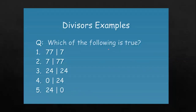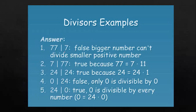Some common examples: 77 divisible by 7, and 7 divisible by 77. You have to see whether these examples are true or not. 77 over 7 is false — a bigger number cannot divide a smaller positive number. While 7 divides 77 is true, because 77 equals 7 times 11. These two are factors of 77, and 77 is a multiple of 7 and 11.